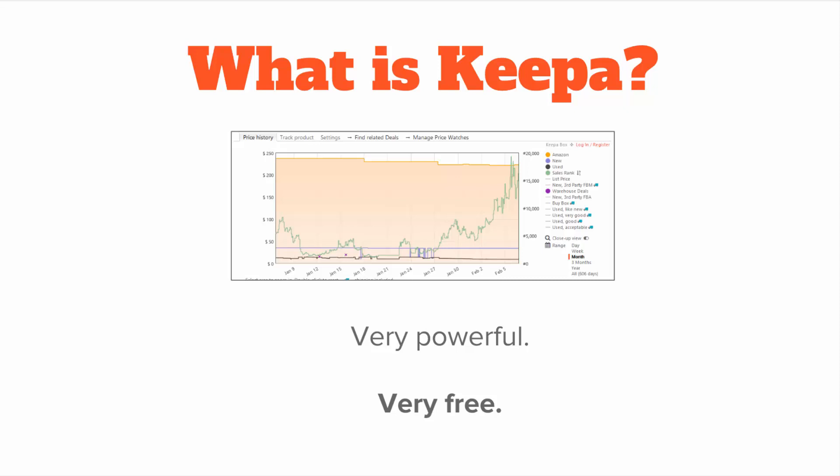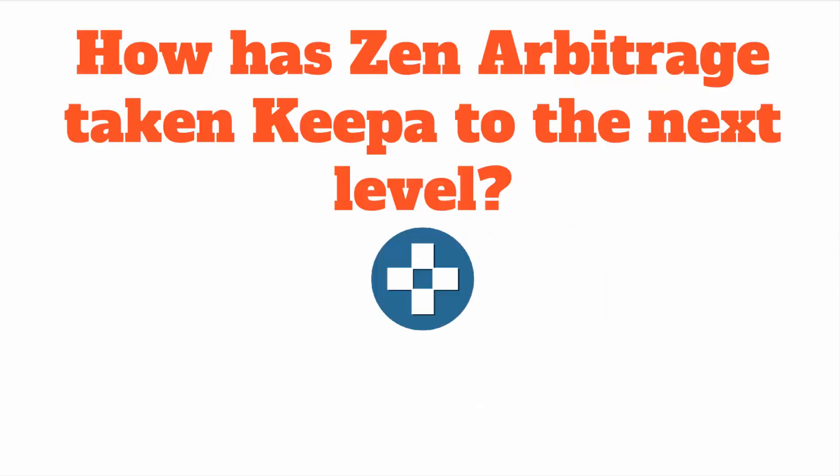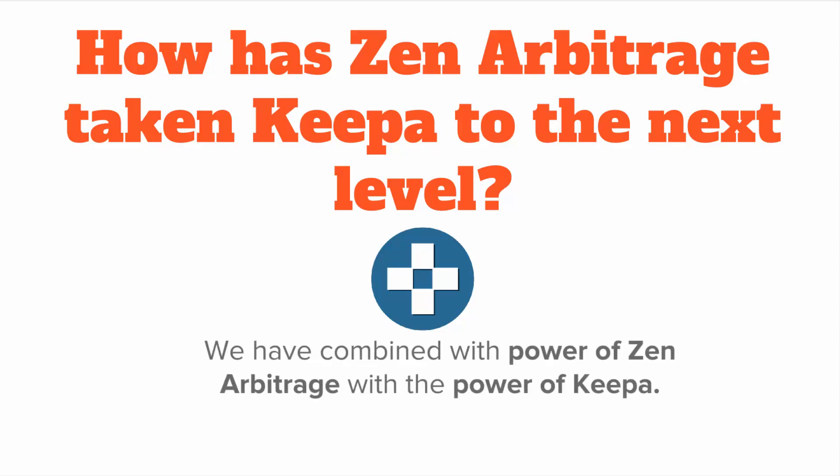KIPA is extremely powerful, and if you don't know this yet, it's also very, very free — and by very free, I just mean free. So how has Zen Arbitrage taken KIPA to the next level? You've always been able to click over from Zen Arbitrage to view KIPA charts for every item. But what's new is something that is about a hundred bazillion times better.